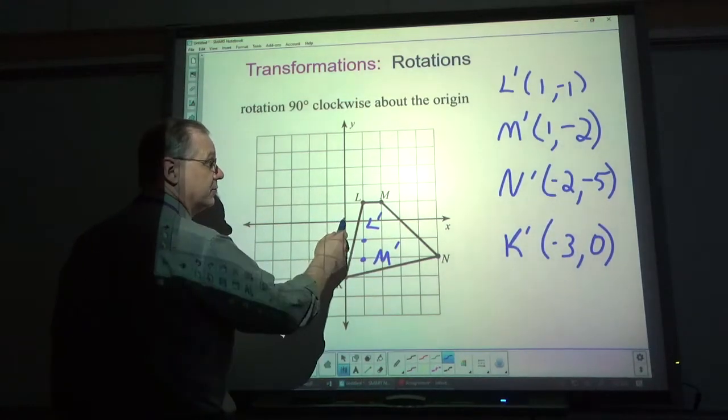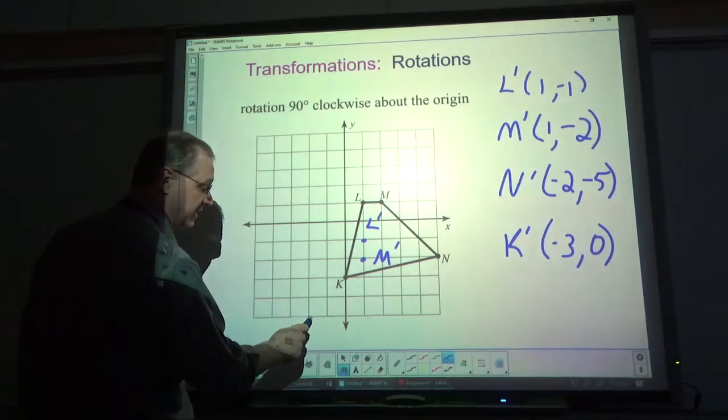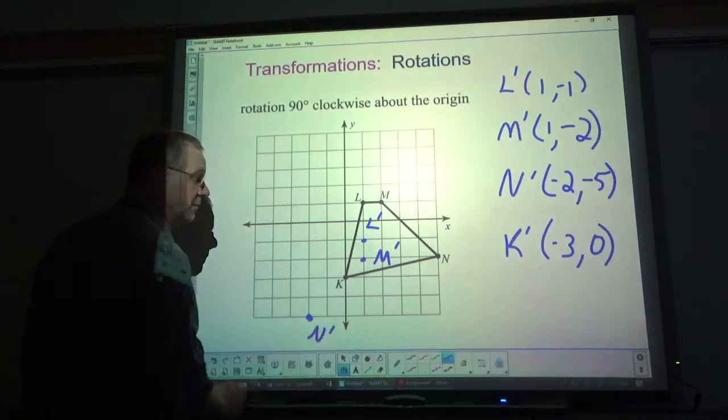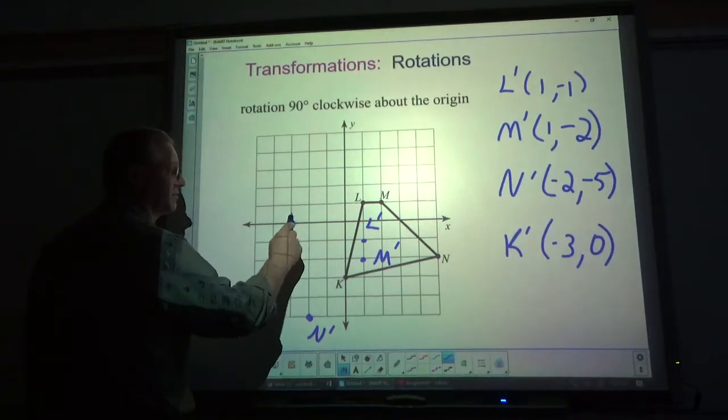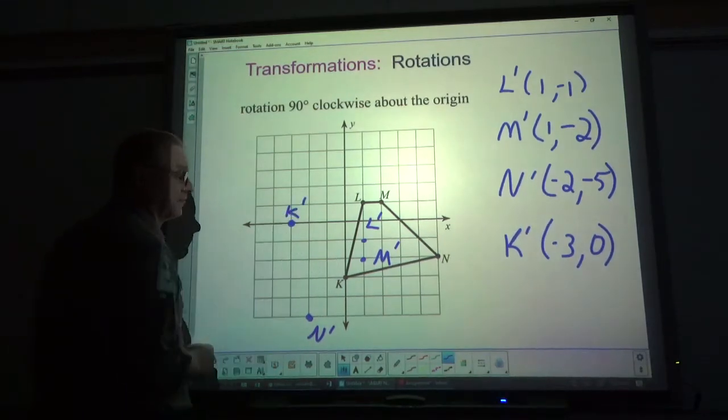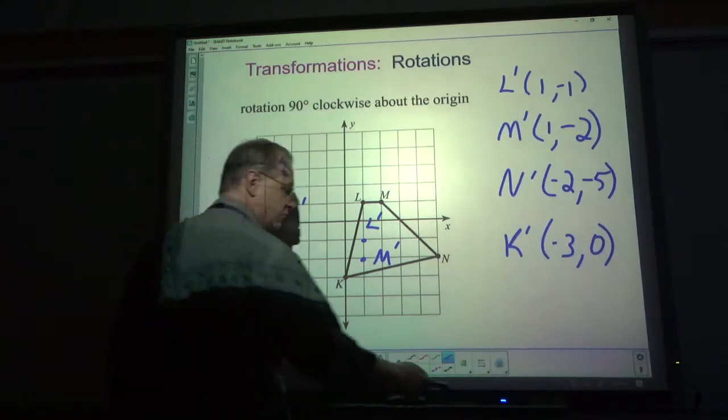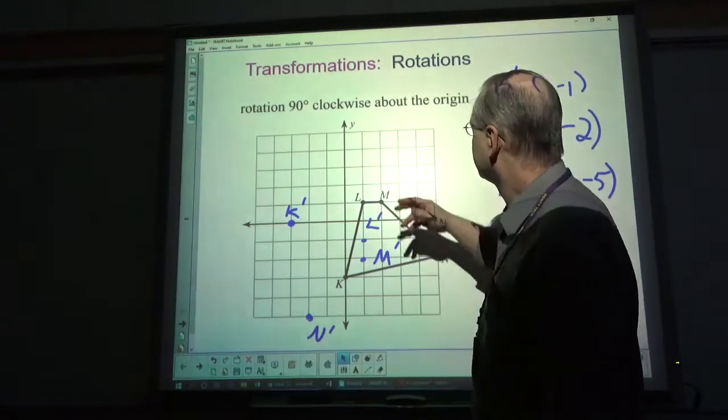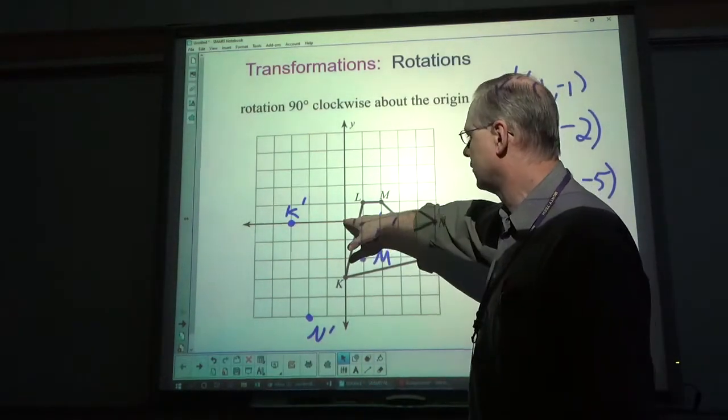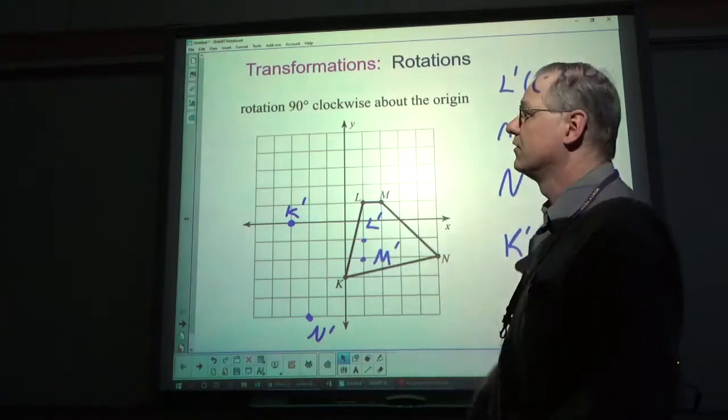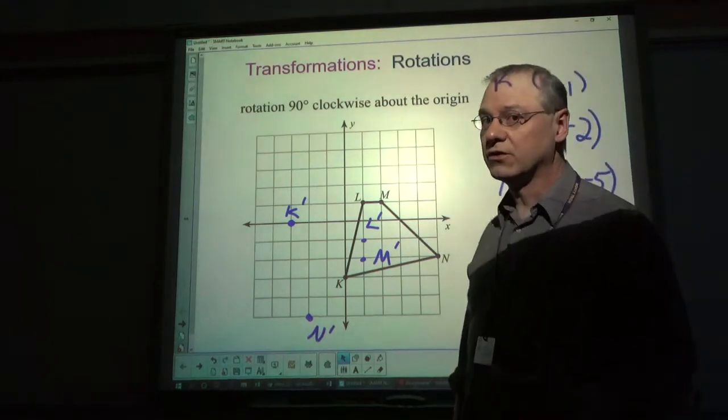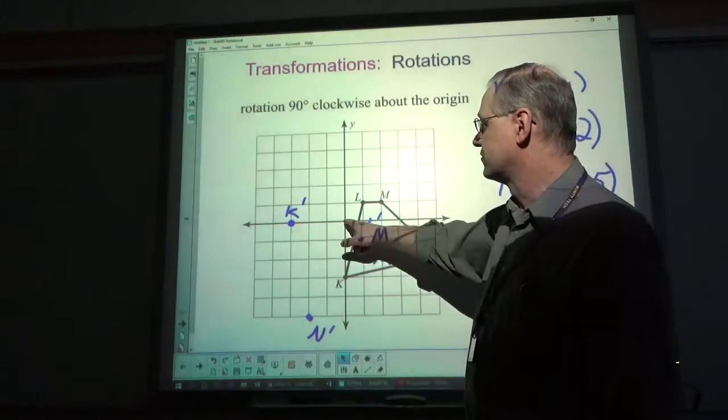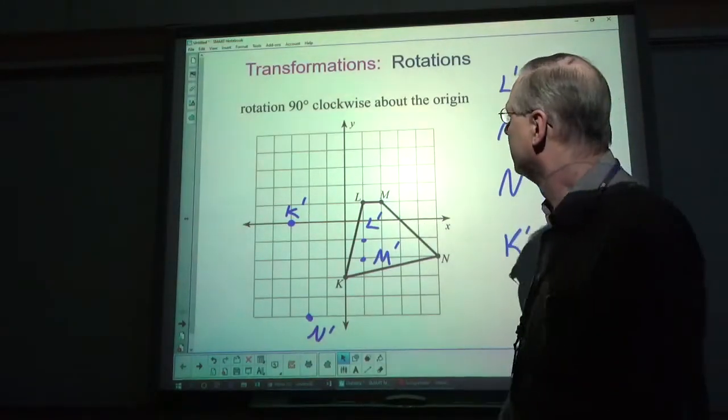N prime is at negative 2, negative 5. And K prime is at negative 3, 0. Now I'm going to, hopefully this, when I rotate it, it's rotating at the origin. There are other possible situations where it rotates at a particular point. We are not going to be doing that. All ours are rotating at the origin.